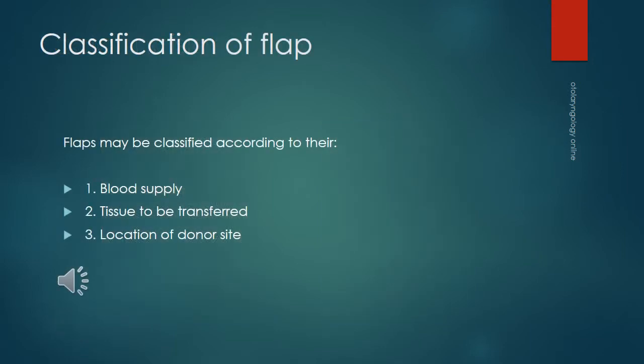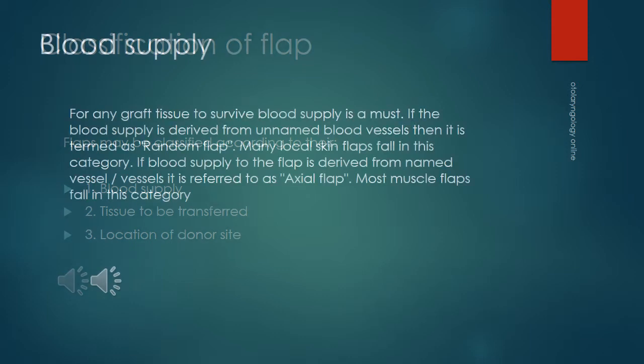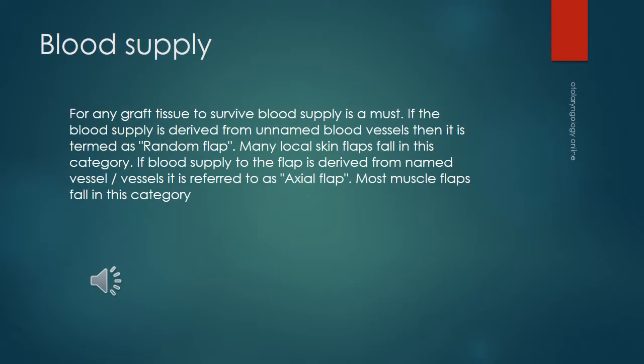Flaps can be classified in a variety of ways, depending on their blood supply, type of tissue to be transferred, and location of the donor site. Blood supply is the most vital component of a flap. Flaps with a named blood supply are known as axial flaps, and flaps that derive blood supply from unnamed vessels are known as random flaps.